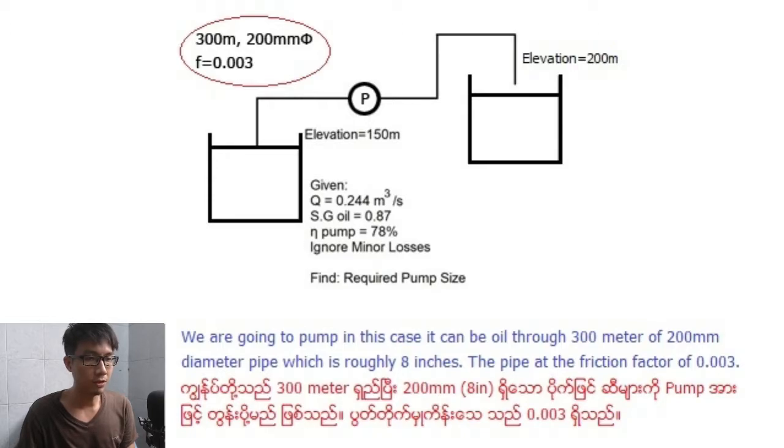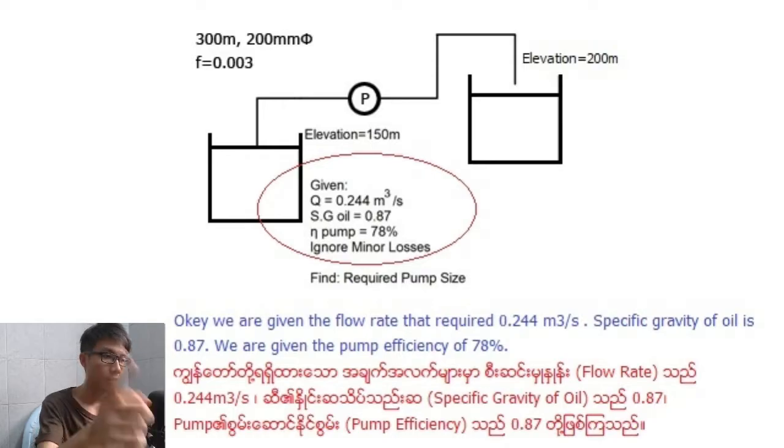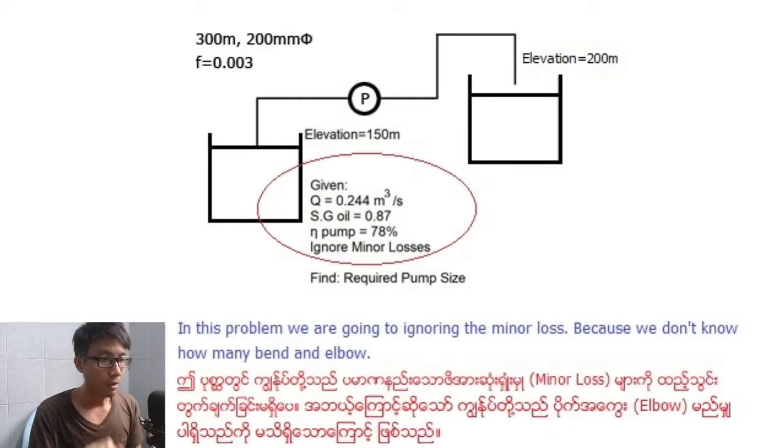The pipe has a friction factor of 0.003. We are pumping from a reservoir at 150 meter elevation to elevation of 200 meters where it will discharge from the pipe and go into the reservoir. We are given the flow rate required as 0.244 cubic meters per second. Specific gravity of the liquid is 0.87. We are given the pump efficiency of 78%. In this problem, we are going to ignore the minor losses because we don't know how many bends and valves.